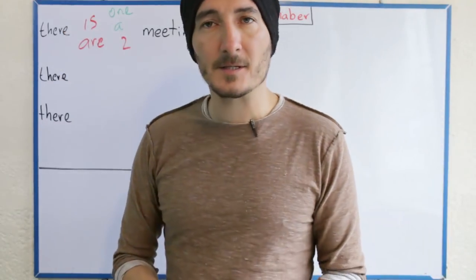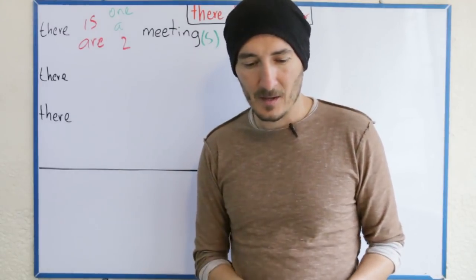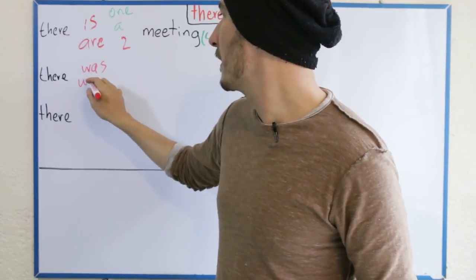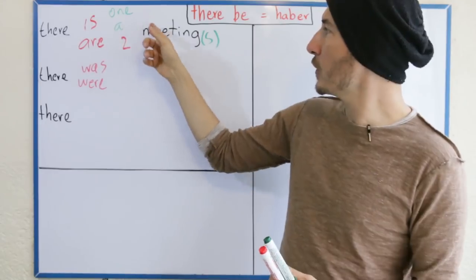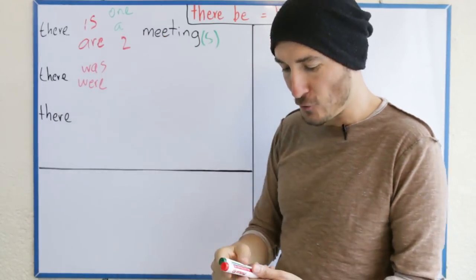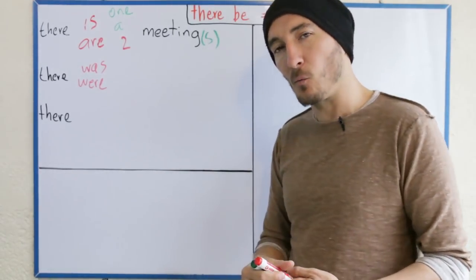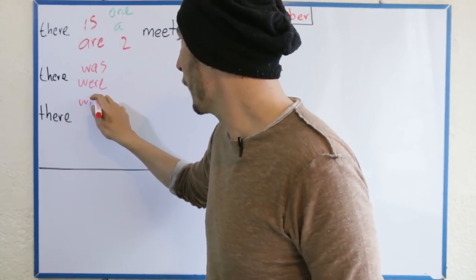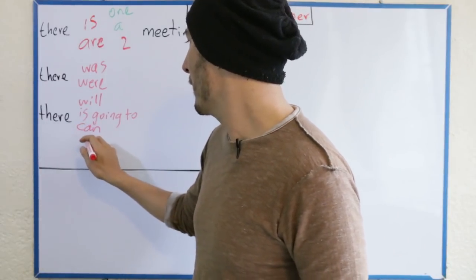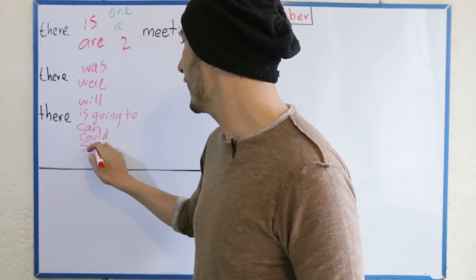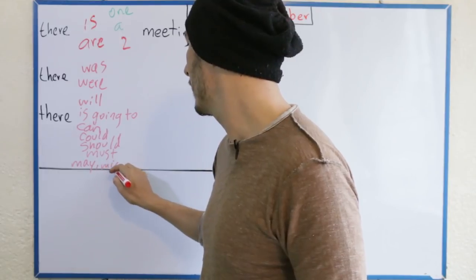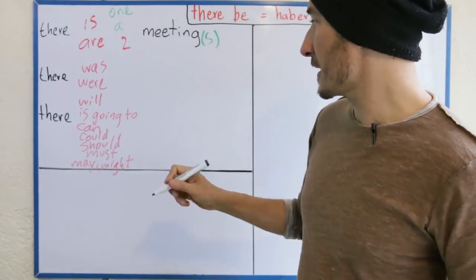There is a meeting, there are two meetings. Estamos aprendiendo inglés and Spanish at the same time — isn't that wonderful? Para el futuro tenemos 'will', para el futuro con 'going to': is going to, are going to. Para expresar posibilidad: can. Para el can en pasado: could. Para el debería: should. Para el must. Para el 'de pronto': may. Igual que como estaba en el video — a todo eso necesito agregarle el 'be'.